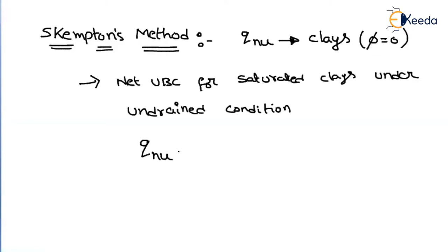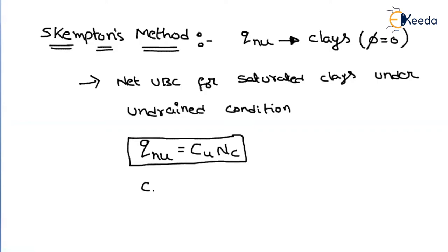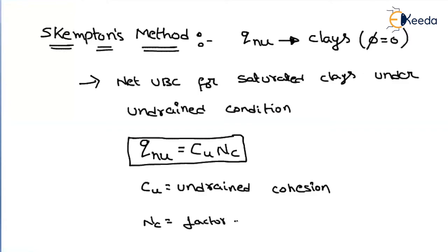According to Skempton's, the net ultimate bearing capacity (Qnu) equals Cu multiplied by Nc, where Cu is the undrained cohesion and Nc is a bearing capacity factor. The Nc value depends on the depth of foundation to width ratio (df/b). Cu will be given, and Nc values differ for different types of footings depending on the depth-to-width ratio.